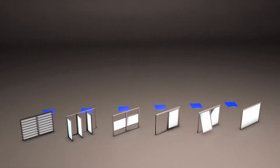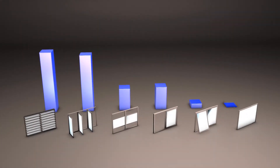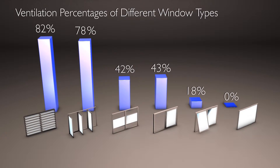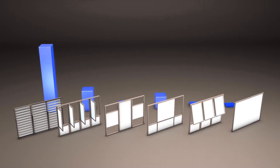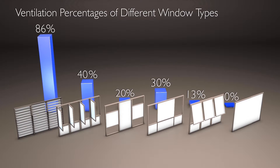From these results, we can see that at smaller sizes, casement windows and Altair Louvre windows offer the greatest ventilation as a percentage of the overall window size. But at the larger window sizes more typically seen in Australian homes, it's hard to beat the ventilation offered by Breezeway Louvre windows, making them a great choice for naturally comfortable buildings that minimise the reliance on power-hungry air-conditioning systems.